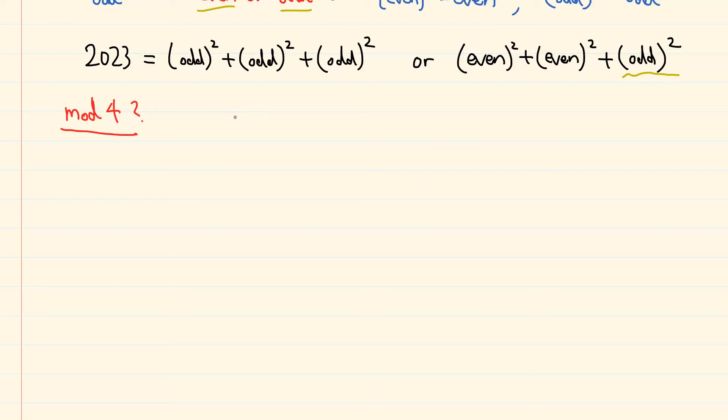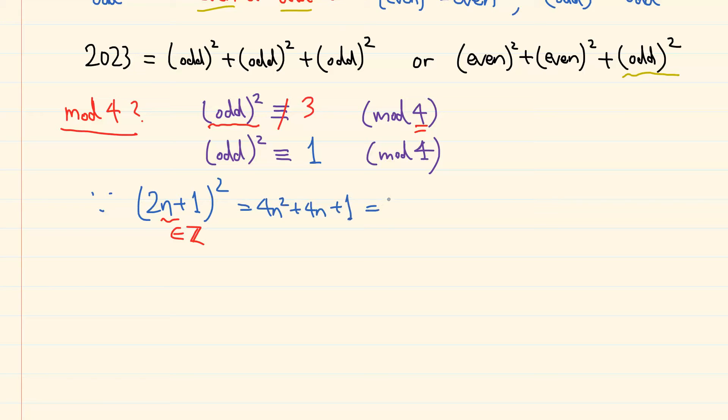Now, some of you might have heard a statement something like this: If the square of an odd number is divided by 4, the remainder cannot be 3. In fact, the remainder can be only 1. This is because any odd number can be expressed as 2n plus 1, where n is integer. And if we square that, we obtain 4n squared plus 4n plus 1, so 4 times (n squared plus n) plus 1, which is congruent to 1 modulo 4.